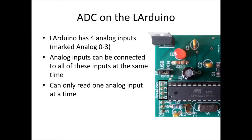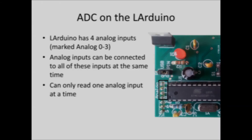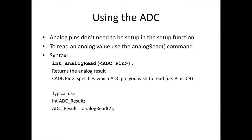On our Arduino we have 4 analog inputs, located on the power side of the board, marked analog 0 through to 3. Analog inputs can all be connected at the same time, but we can only read from one at a time, so we read one, then the next, and so on. Analog inputs don't need to be set up in the setup function — all we need to do to read them is use the analogRead command, specifying the pin number between 0 and 3. This returns a result between 0 and 1023.